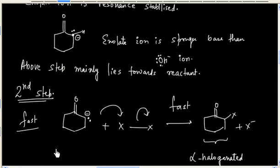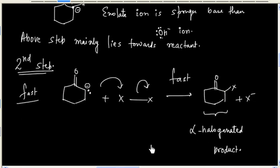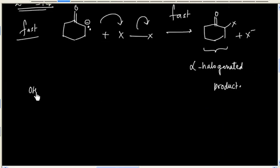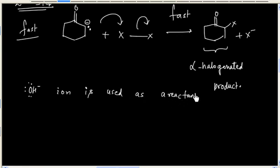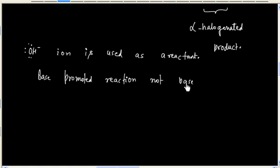Now, this reaction is not base-catalyzed — it uses OH⁻. In the first step, OH⁻ is used but we have not regenerated OH⁻ ion, so OH⁻ ion is used as a reactant in this reaction. This kind of reaction is called base-promoted, not base-catalyzed. The base is not a catalyst; it is a reactant.